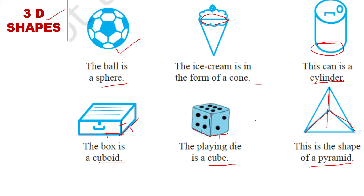10th class में आप पढ़ोगे एक नया 3D shape — when you cut a cone with a plane parallel to the base, then the small cone is removed। इसको remove कर देंगे, तो जो remaining portion होगा, that is called frustum। याद रखिएगा। So thank you very much — like और subscribe जरूर करिएगा। अपना खयाल रखिएगा और उनका भी खयाल रखिए जो आपका खयाल रखते हैं। God bless you।